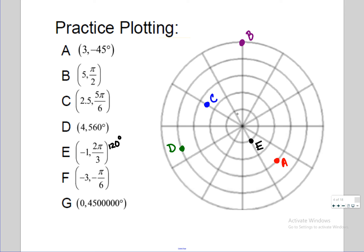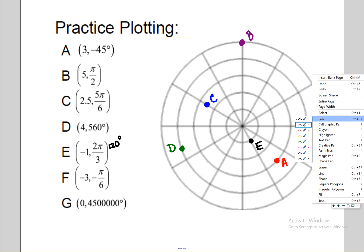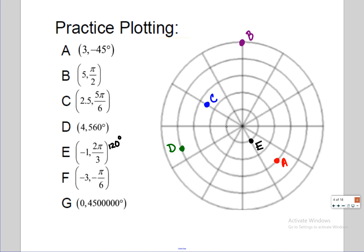For point F: negative three, negative pi over six — go three to the left. Pi over six is 30 degrees, and since the angle is negative that means clockwise. So rotating clockwise 30 degrees from the left point — that's one ray — gives you point F. Points F and C are going to be really close together.